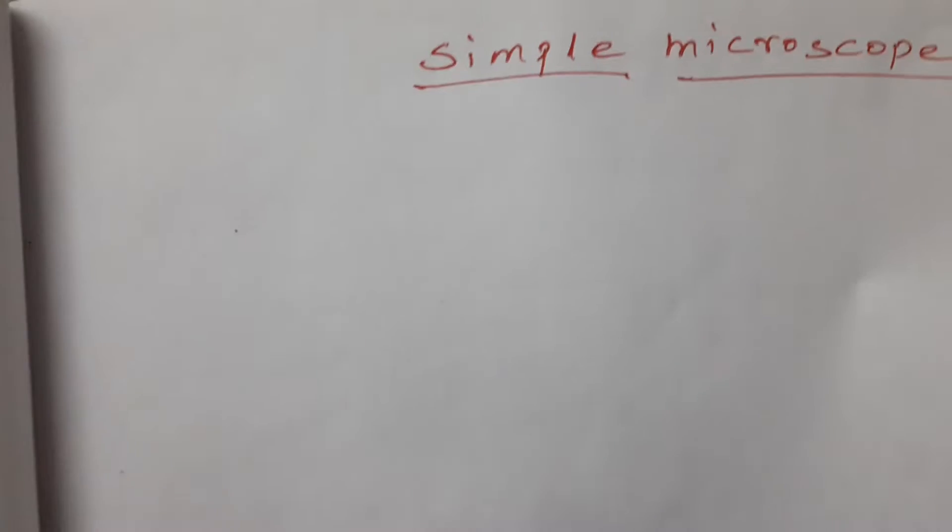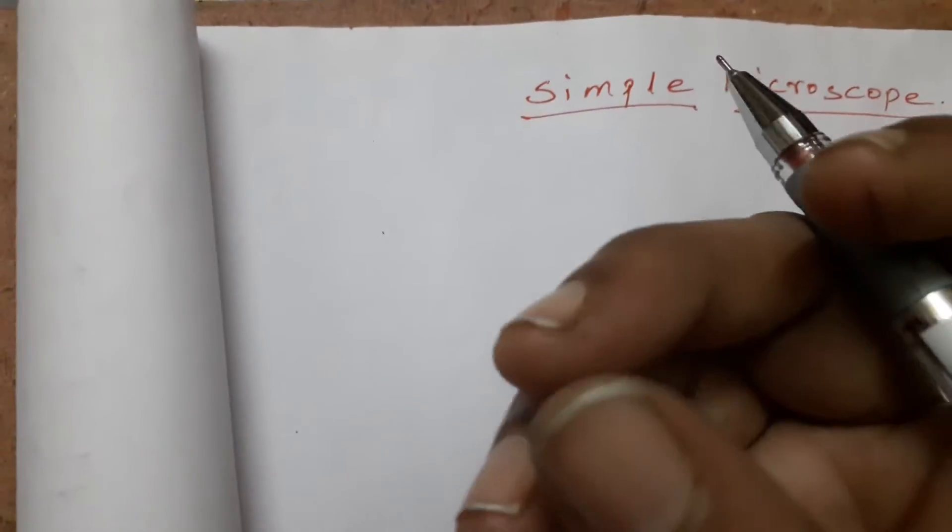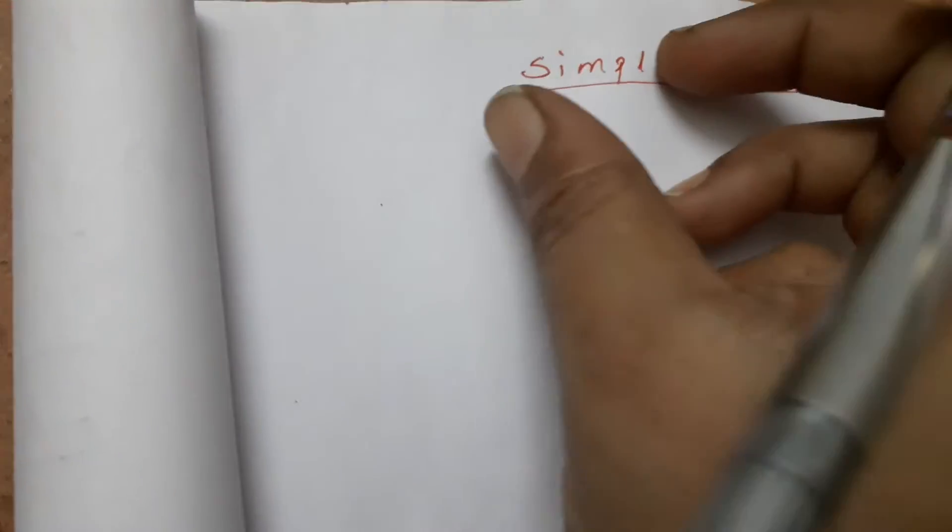In this video, we are going to see the simple microscope. What is a simple microscope? The palm reader uses a convex lens to see the palm and the lines in the palm — that is the simple microscope. Even we use reading lenses to enlarge letters and see. That is the simple microscope.